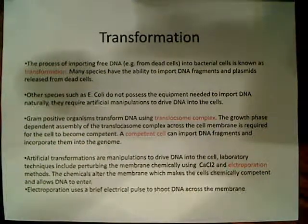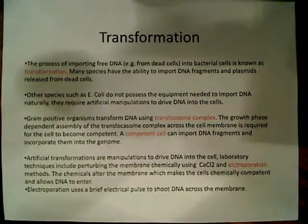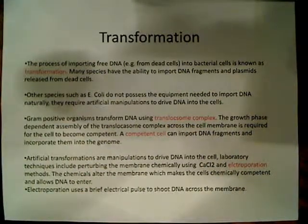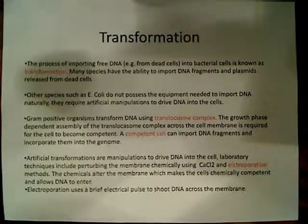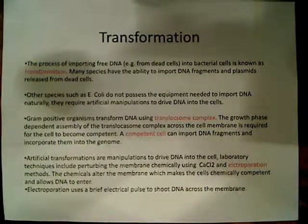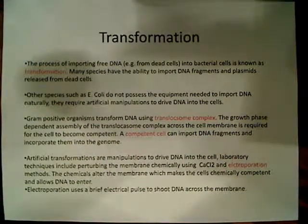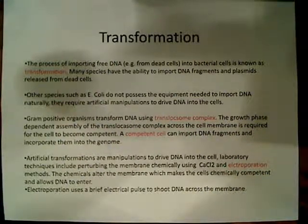Transformation is one of the types of gene transfer we just talked about. It's a process of importing free DNA. The free DNA can either be introduced by a scientist in a lab, or it may come from dead cells in the natural environment. You import the DNA into the bacterial cells — that's basically transformation. Many species have the ability to import DNA fragments and plasmids released from dead cells, but not all. A good example is E. coli, which does not possess the equipment needed to import DNA naturally.